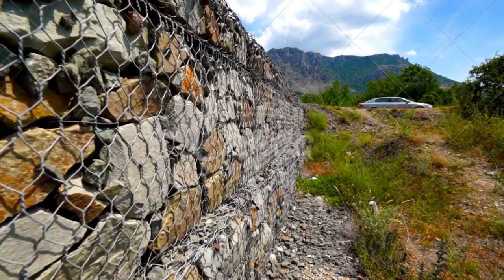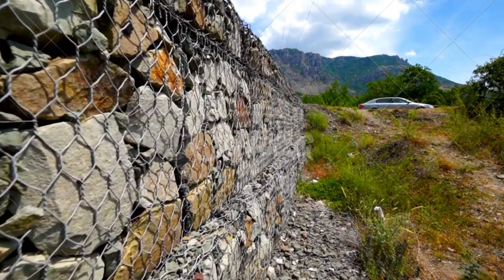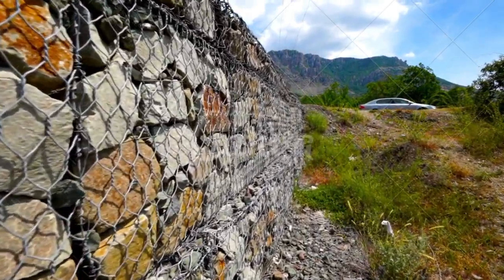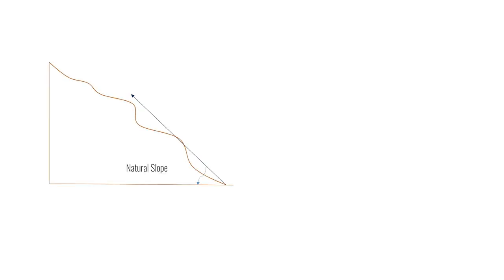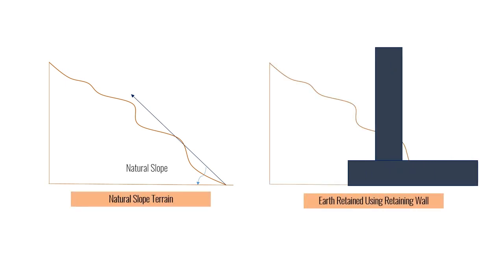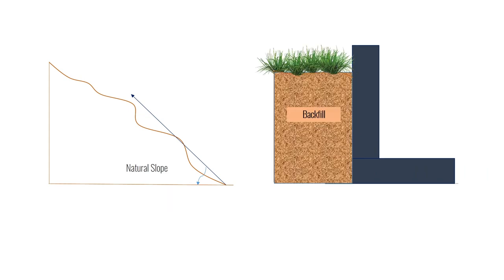Retaining walls are structures designed to restrain soil or any engineering material at a slope steeper than what it can hold naturally. The earth retained by retaining walls may be a natural soil or any filling material. The material retained or supported by the retaining wall is what we call the backfill.